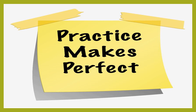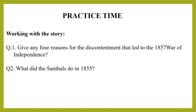Now it's time to practice some questions from the story. Here we try to understand the questions given in working with the story. Question number one: Give any four reasons for the discontentment that led to the 1857 war of independence. Question number two: What did the Santhals do in 1855? That's it for today, kids. You have to attempt these questions on your own.